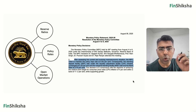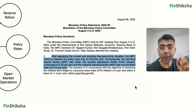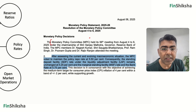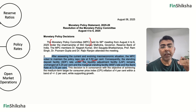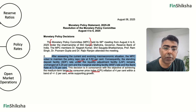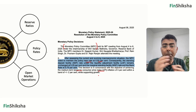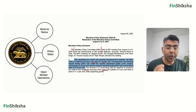We recently had a policy meet. The exact statement reads: after assessing the current and evolving macroeconomic situation, the MPC — the Monetary Policy Committee, which has six members meeting six times a year — decided to maintain the policy repo rate at 5.5%. Consequently, the Standing Deposit Facility is at 5.25% and MSF remains at 5.75% under the Liquidity Adjustment Facility. The decision is in consonance with the objective of achieving a medium-term CPI inflation target of 4% plus or minus 2%. The RBI report is available on their website and worth reading.